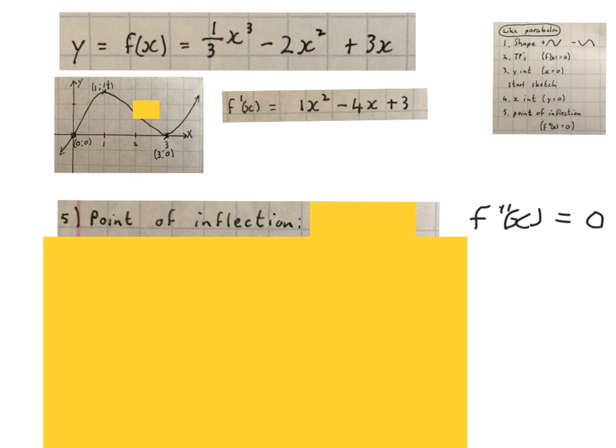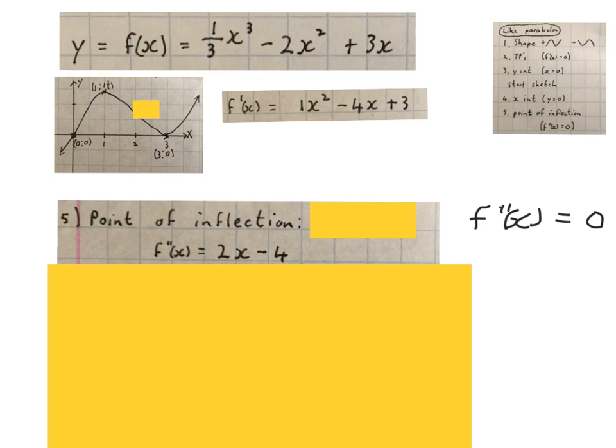To find your point of inflection, you work out your second derivative, double stripe in the air, and equate it to 0. Here is my first derivative. So I now work out my second derivative. That will look like this. 2x minus 4. And then I equate it to 0.